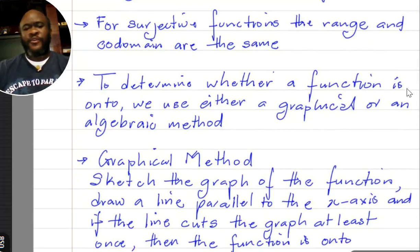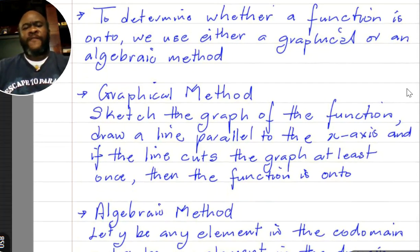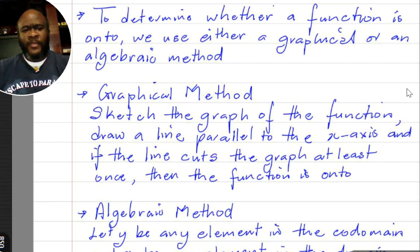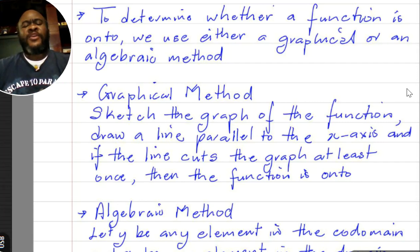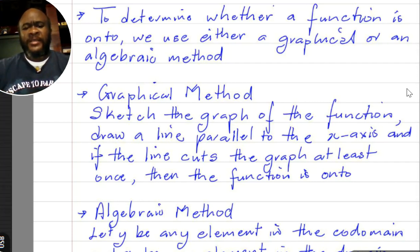To determine whether a function is onto (surjective) or not, we can either use a graphical or an algebraic method. For the graphical method, we must sketch a graph of the function and then draw a line parallel to the x-axis. If this line cuts the graph at least once, then the function is onto. Every horizontal line we draw parallel to the x-axis must cut the graph at least once. If we can draw a horizontal line that does not cut the graph, the function is not surjective.